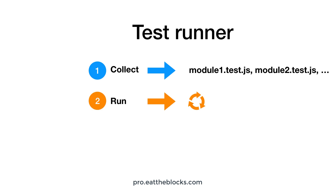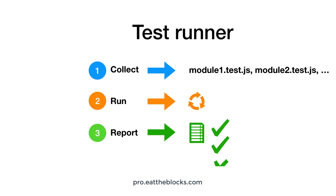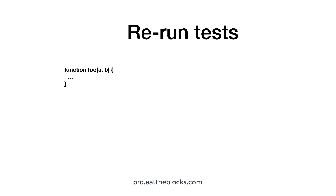Then it runs your tests. Finally, it gives you a testing report. In this report you will find a detailed breakdown of which tests passed and which tests failed. If you don't find any tests that failed, you can just continue to work on the next feature. Otherwise, you need to fix the tests that failed before continuing.